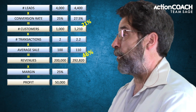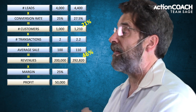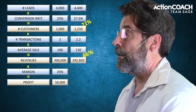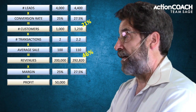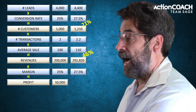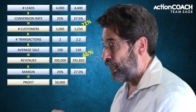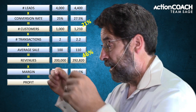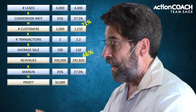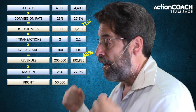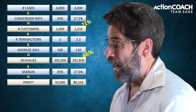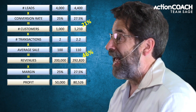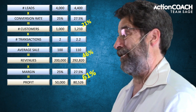Now if I take my 25% margin and increase that by 10%, I get 27.5%. Multiplying $293,000 in revenues by 27.5% gives approximately $81,000 in profit — a 64% increase. Just from 10% improvements across all five areas.